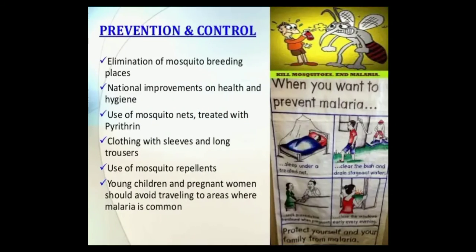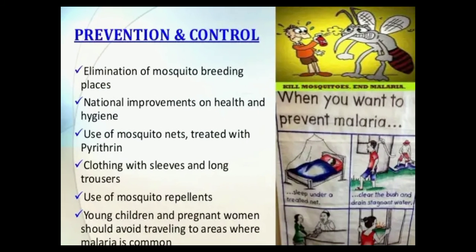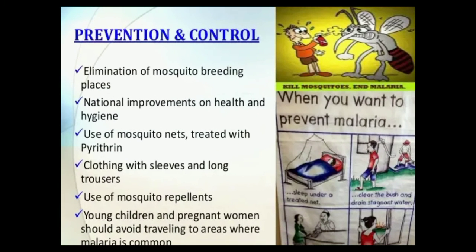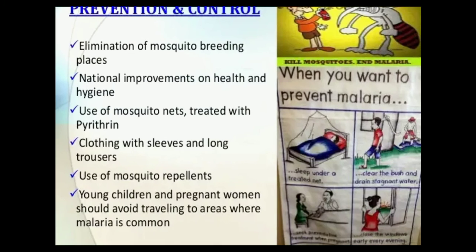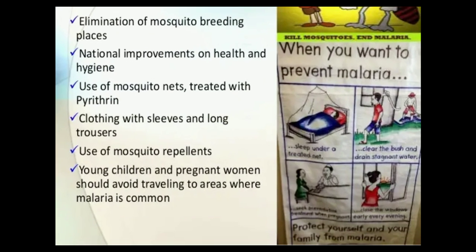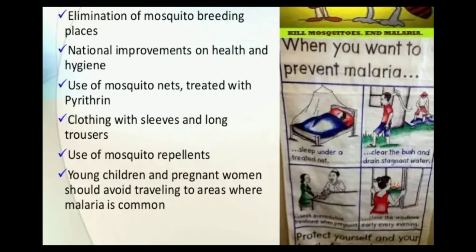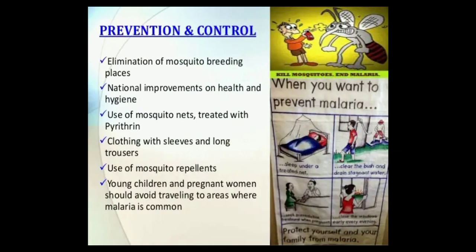Prevention and control methods include: elimination of mosquito breeding places, improvements in health and hygiene, use of mosquito nets treated with pyrethrin, clothing with sleeves and long trousers, use of mosquito repellents. Young children and pregnant women should avoid traveling to malaria-prone areas. Biological control includes using mosquito fish, Gambusia, which feeds upon and kills the pupa and larva.